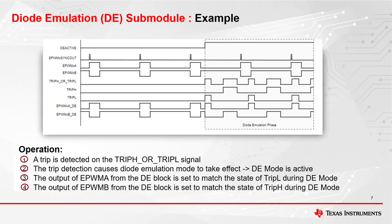Let's take a look at a waveform example of what happens during diode emulation mode. First, a trip must be detected on the trip H or trip L signal — this signal is simply an OR between trip H and trip L. Second, diode emulation mode is active when indicated by the DE active flag. Third and fourth, the output of EPWMXA_DE follows trip L. The output of EPWMXB_DE follows trip H, and PWMB from the diode emulation block is set to match the state of trip L and trip H respectively.